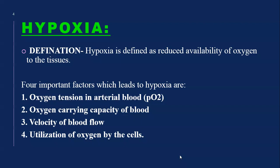There are four important factors which can lead to hypoxia. The first is oxygen tension in the arterial blood, second is the oxygen carrying capacity of the blood, third is the velocity of blood flow, and fourth is the utilization of oxygen by the cells.